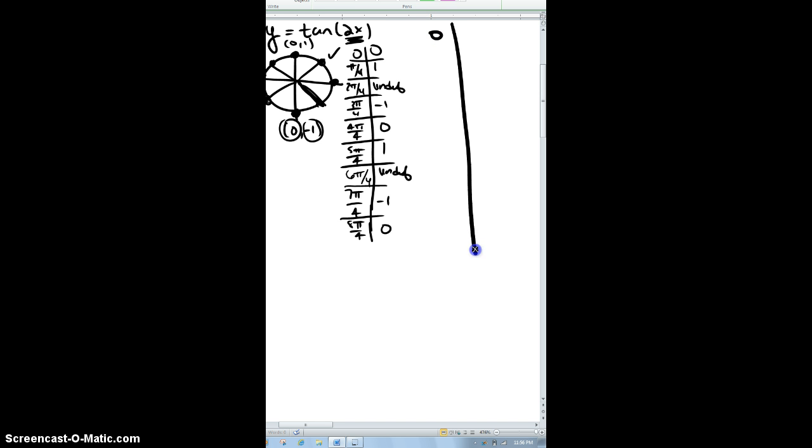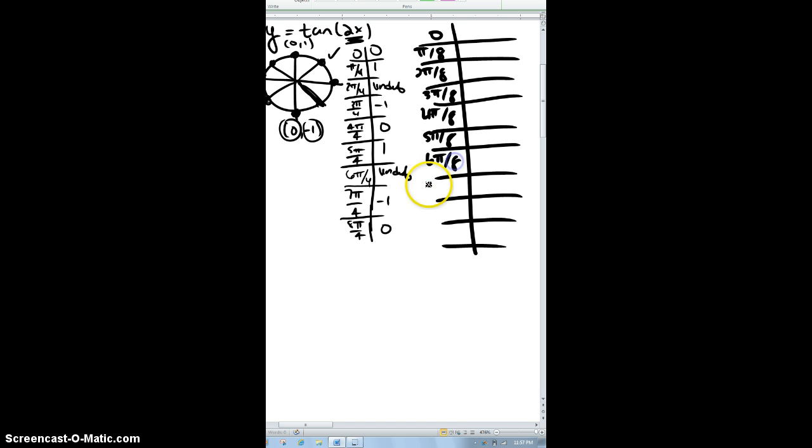So I'm going to have 0. So I'm just taking half. So half of 0 is 0. Half of that is pi over 8. This guy would be 2 pi over 8. So 3 pi over 8, 4 pi over 8, 5 pi over 8, 6 pi over 8, 7 pi over 8, and then 8 pi over 8.